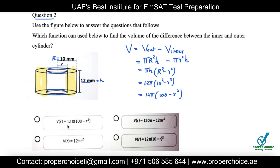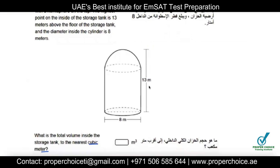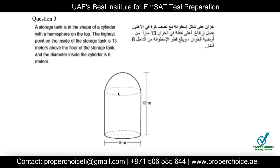Question three says: a storage tank is in the shape of a cylinder with a hemisphere on top. The highest point on the inside is 13 meters above the floor, and the diameter inside the cylinder is 8 meters. We need to find the total volume inside the tank to the nearest cubic meter. The upper part is a hemisphere — half of a sphere. The diameter of the base is 8 m, so the radius is 4 m.